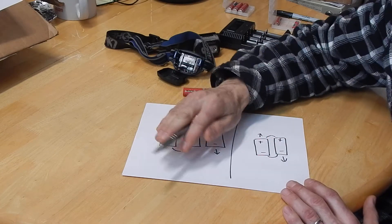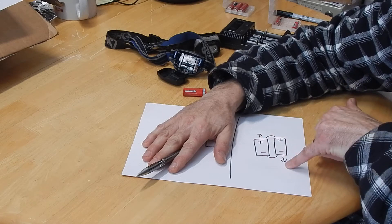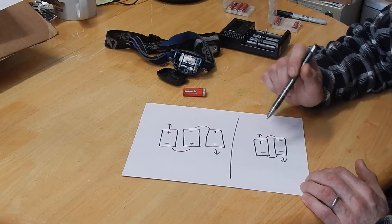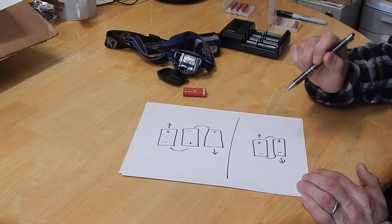What we're going to be doing is going to this configuration where you have your positive and negative out to the circuit, but you have them connected in parallel. In other words, you just connect the negatives and the positives together to increase your reserve time, not to increase the voltage.